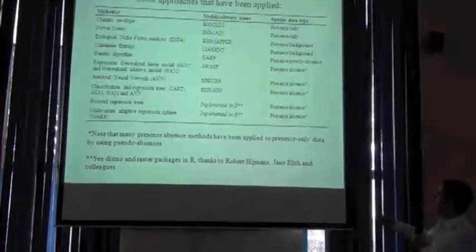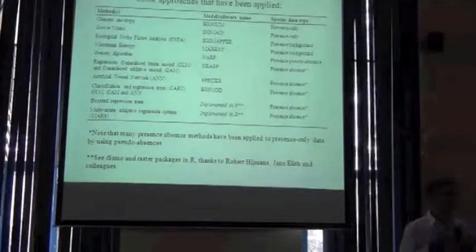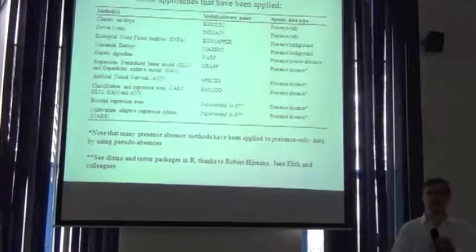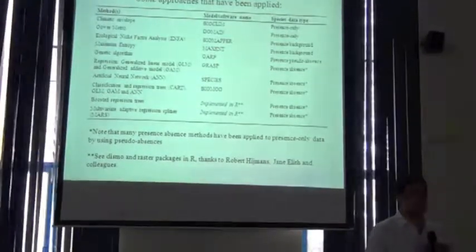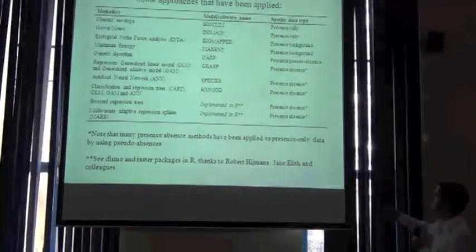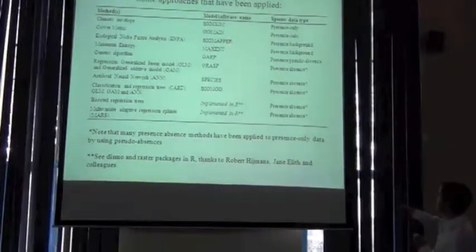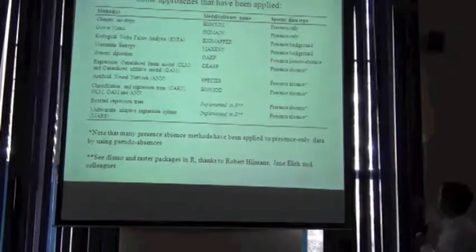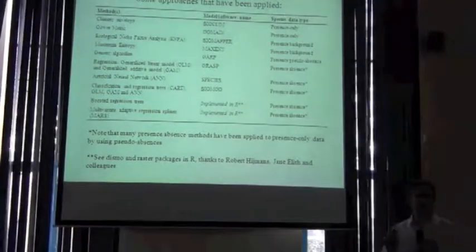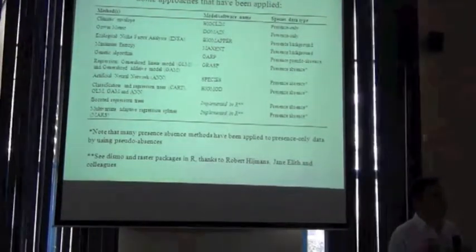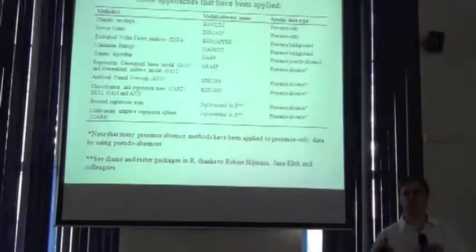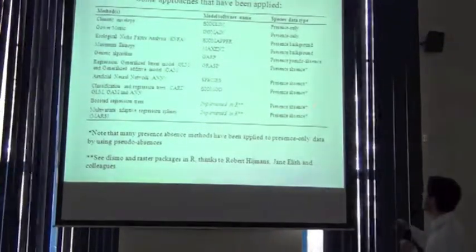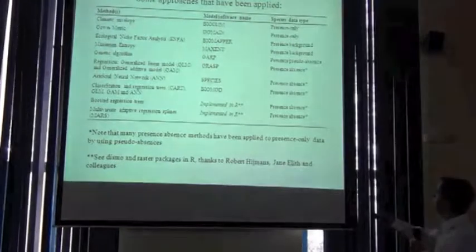There are some generic approaches. An artificial neural network doesn't need to be run within a specific software tool — it could be run in any number of different frameworks. So we've got methods here, the models or software names you might see in the literature. And then, really crucially, there is the issue of what is the data type that a particular model takes. So depending on your data and decisions you need to make — for example, are you going to include absence data? Do you have it? Is it reliable? That's going to dictate in many ways what kind of modeling you might use.